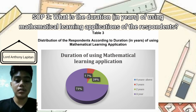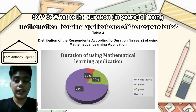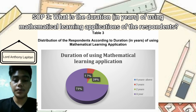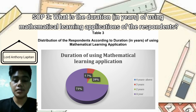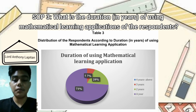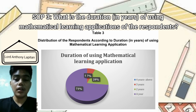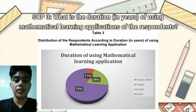What is the duration in years of using mathematical learning applications of the respondents? In terms of duration, 73% of respondents have used mathematical learning applications for one year. For two years, there are 20% of respondents. For three years, there are 7% of respondents, while for four years and above, there are no respondents.